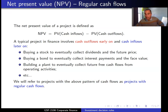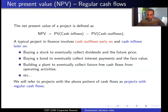When you buy a stock, you pay at time zero and receive dividends and the future price at a later date. When you buy a bond, you pay today and receive coupon payments and the face value at a later date. For a company, it pays the initial investment first to build a plant or start a new project and collects cash flows or profits at a later date. These are projects with regular cash flows.